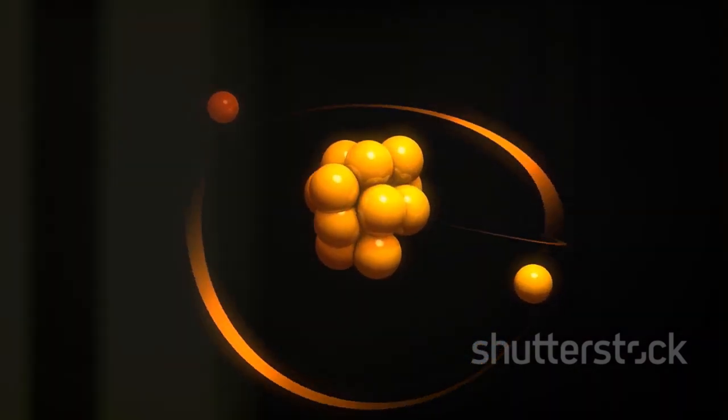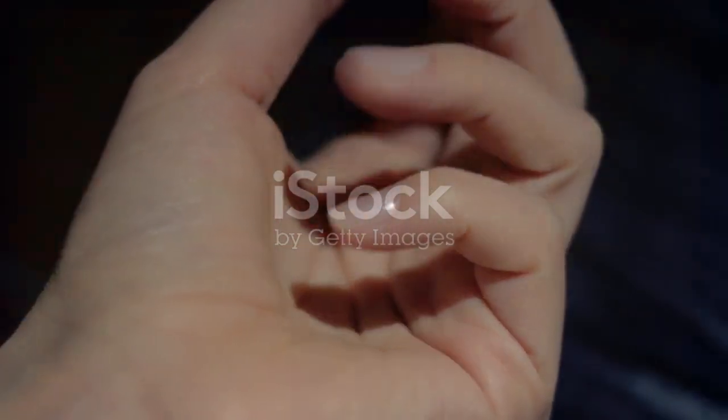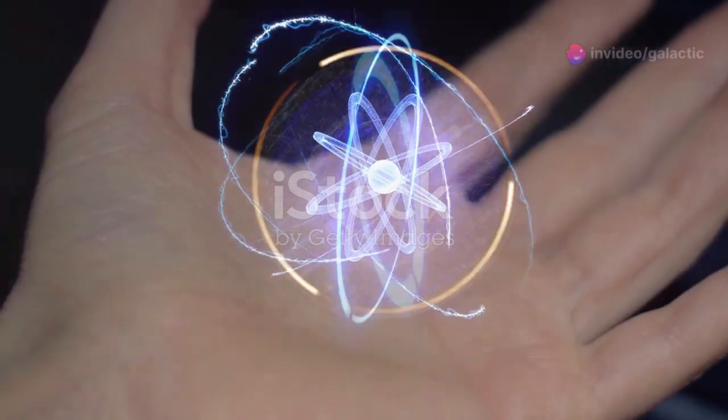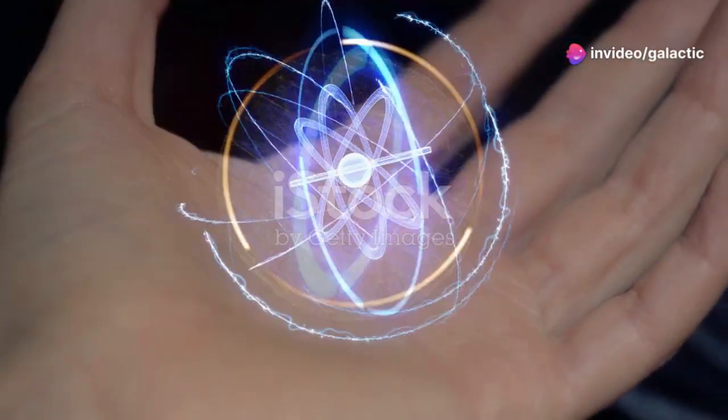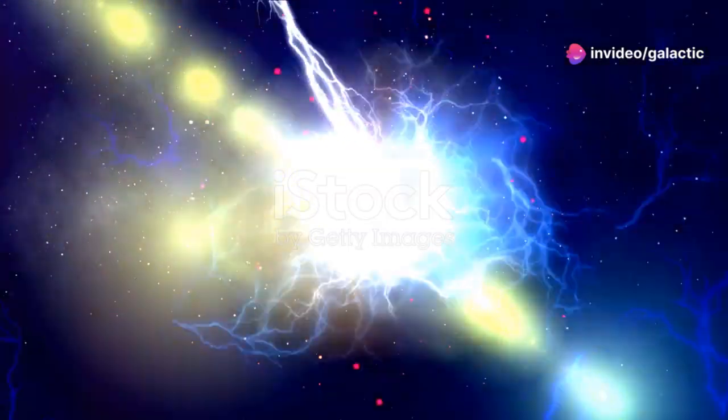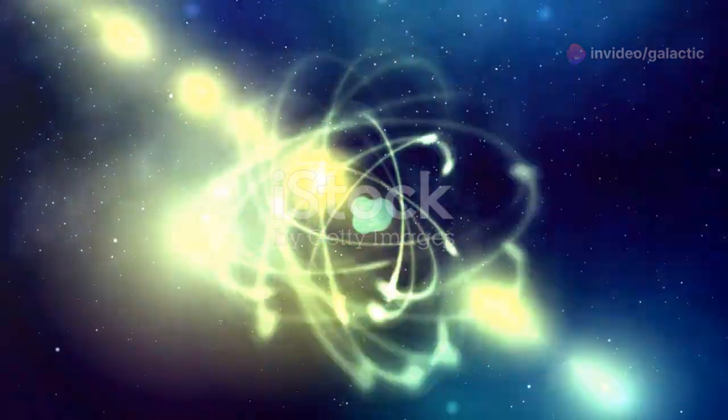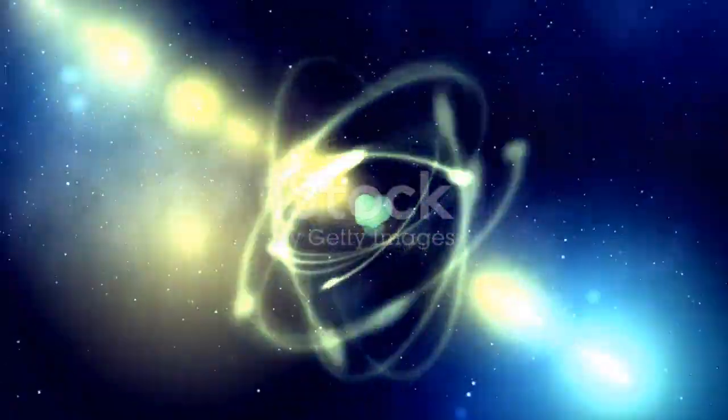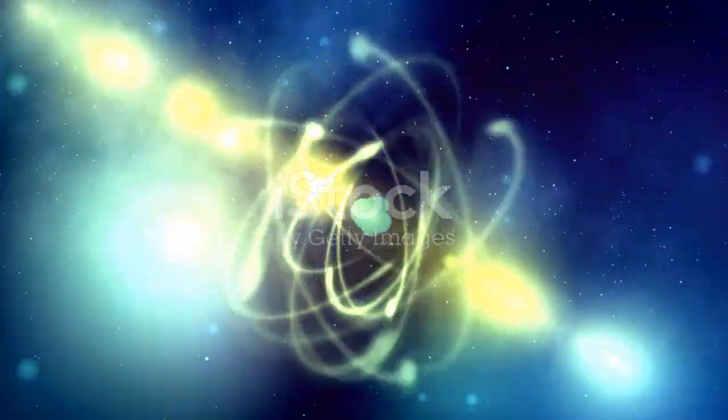Scientists and philosophers have drawn parallels between the structure of the atom and the solar system. This comparison highlights the recurring theme of interconnectedness. Just as the solar system has planets orbiting the sun, atoms consist of electrons orbiting a nucleus.